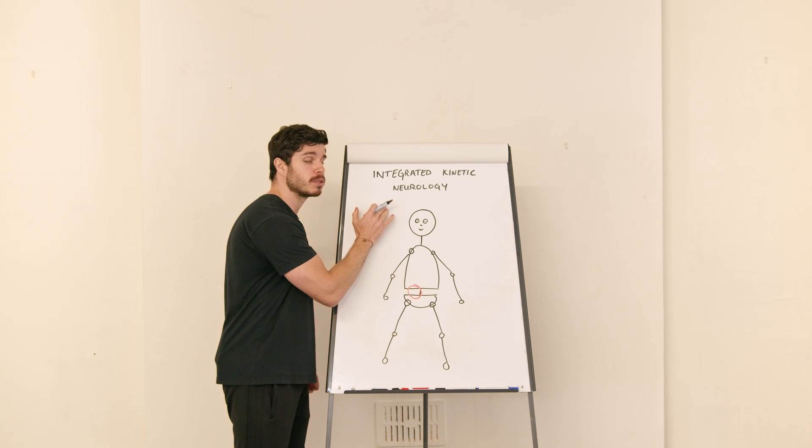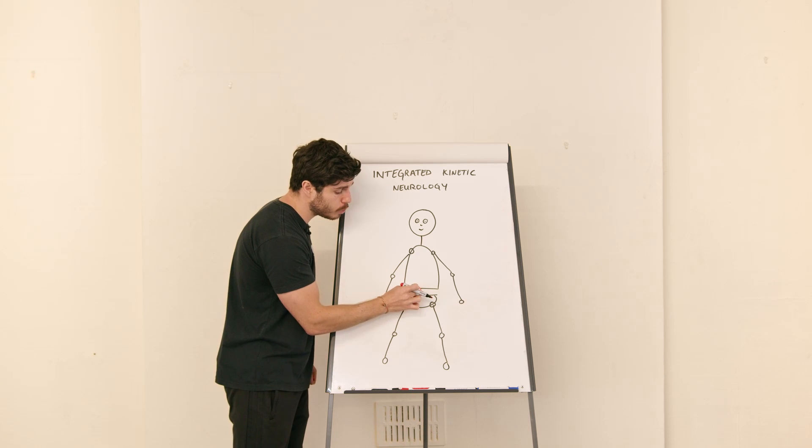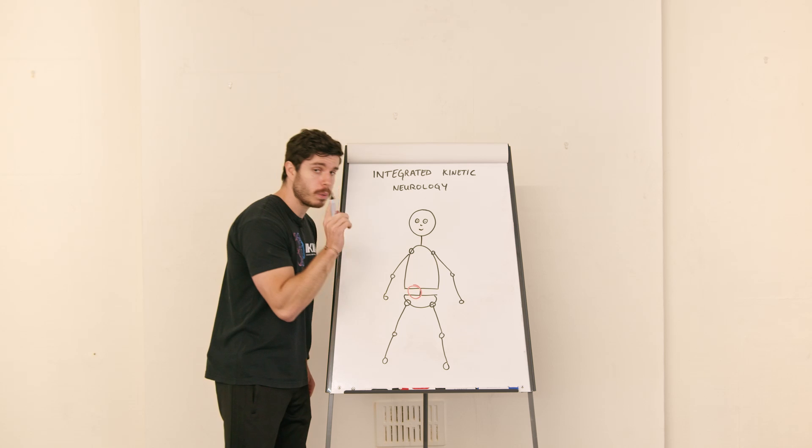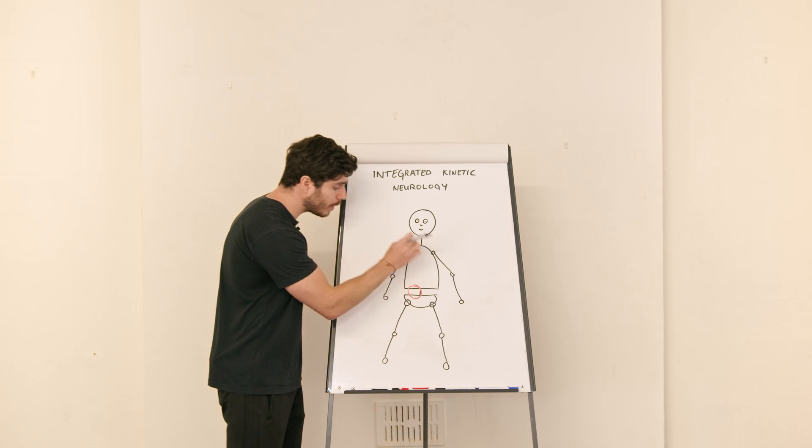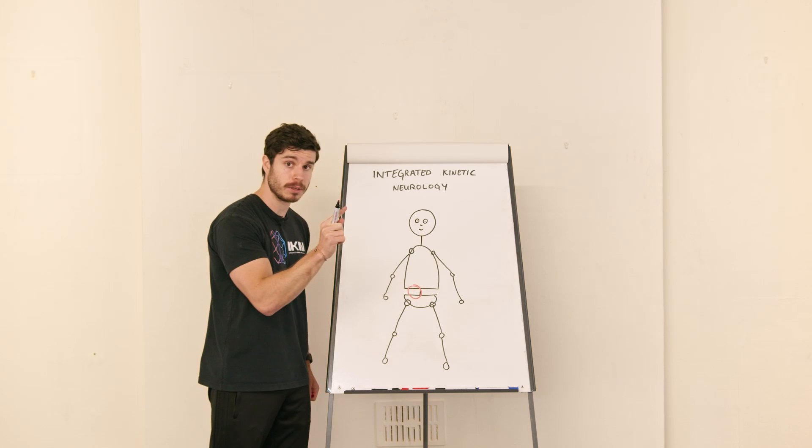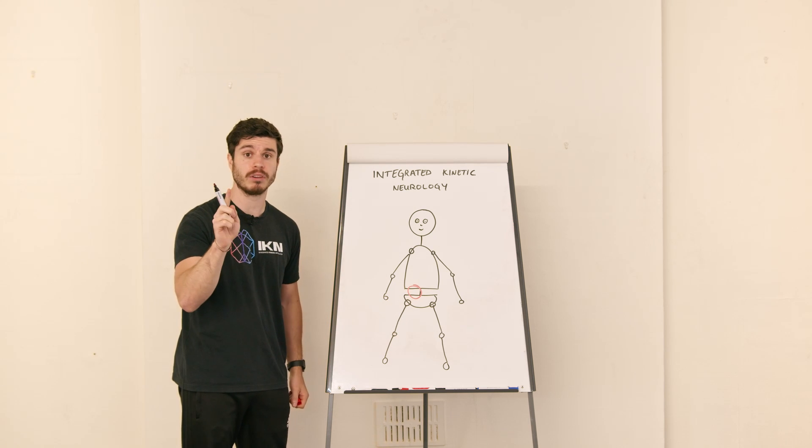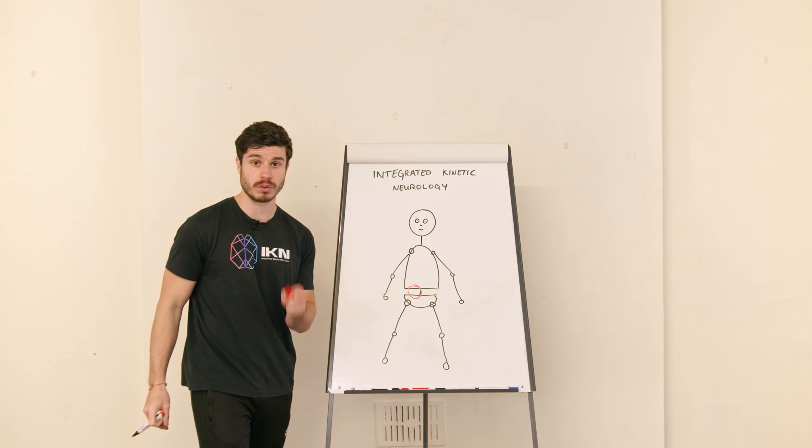But if we were to look at things from an IKN perspective, if an individual has pain in the lower back, what we need to do is understand: can the midline be adaptable? And can the lower limb be an effective lower limb and dampen stress once the foot hits the ground?